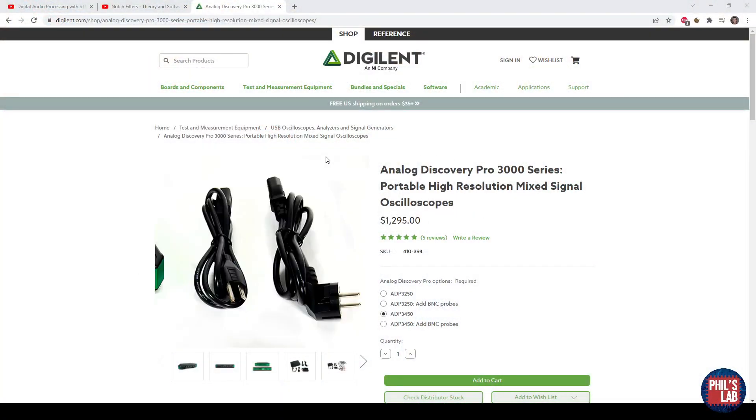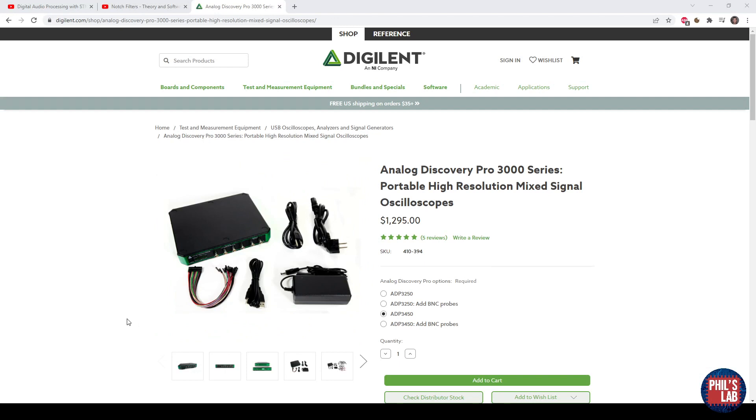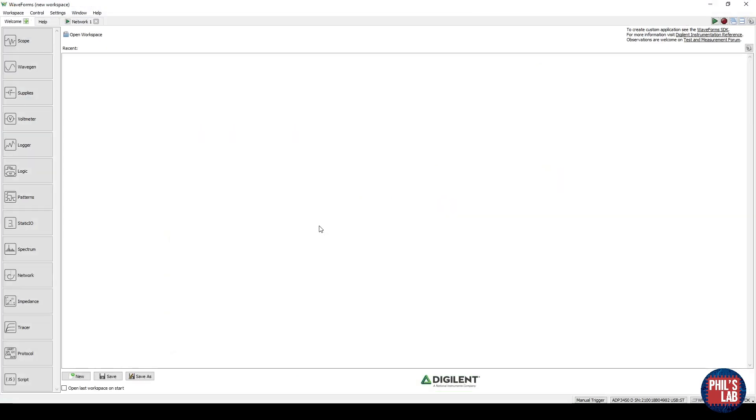I'll be using this analog discovery pro which was very kindly sent to me by Digilent for my test setup. So I have four channels of essentially oscilloscope, two channels of function generator and this has various other goodies which we'll probably explore in future videos. The free software that runs on your host computer which connects to the analog discovery pro is this waveform software and I believe this runs on mac windows and linux. We have various functions on the left here so we have an oscilloscope, function generator, as well as this network analyzer which we'll be using in just a second.